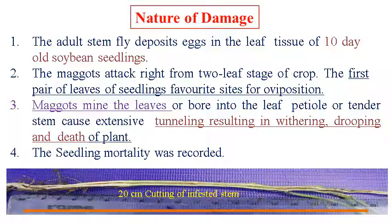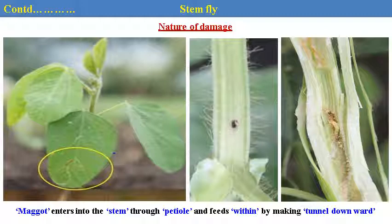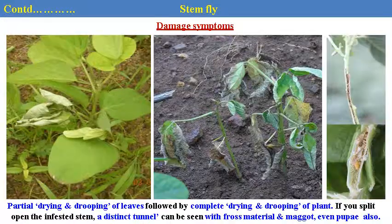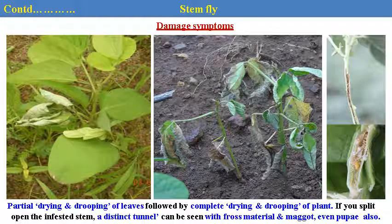Seedling mortality was recorded. This is a 20 cm cutting of an infested stem showing infestation by stem fly. The stem fly maggots enter the stem through the petiole and feed within by making a tunnel downward in the stem, so withering and drying of the plant is observed. In the field, partial drying and drooping of leaves followed by complete drying and drooping of the plant can be observed. Even when we cut or dissect the stem, we can get the pupa and the maggot — it is very easy to identify in the field.